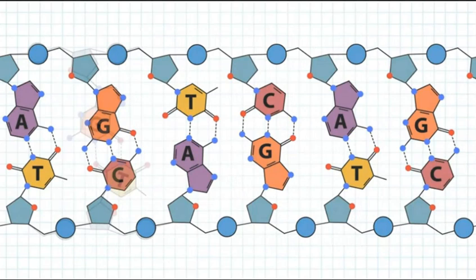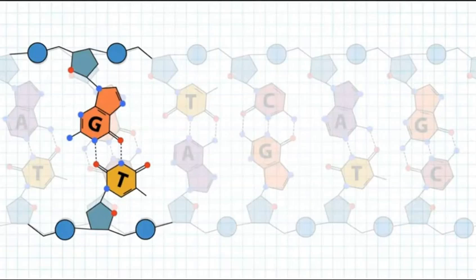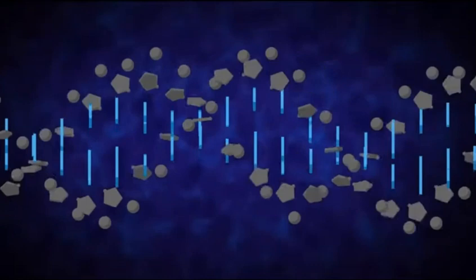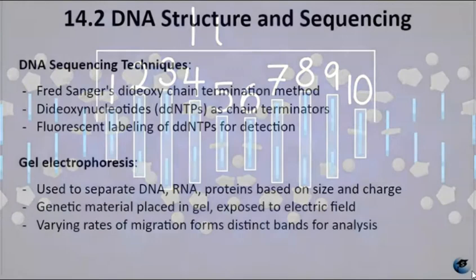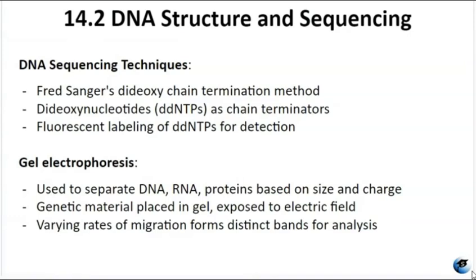Other base pairs, like GT for example, do not have the same geometry, cannot form strong hydrogen bonds, and disturb the helix. The double helix structure of DNA is highly regular, and each turn of the helix measures approximately 10 base pairs. DNA sequencing was a really lengthy and expensive process up until the 1990s, when advancements in technology and automation made it safer, cheaper, and faster to sequence DNA.